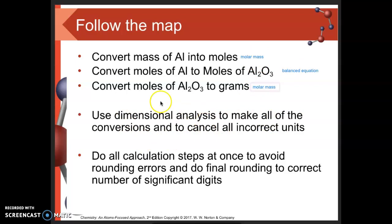For each of these three conversions, I'm going to use dimensional analysis to cancel all the incorrect units. I want to make sure I do all calculation steps at once. I don't want to calculate the moles, hit enter, round it off, convert to moles of aluminum oxide, round it off, and then convert to grams and round again. Every time I round, I introduce more error, lowering the likelihood of getting the question right.